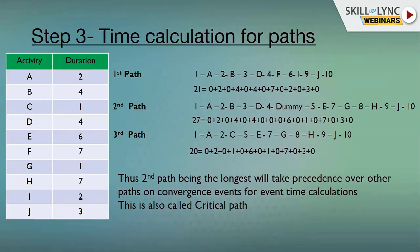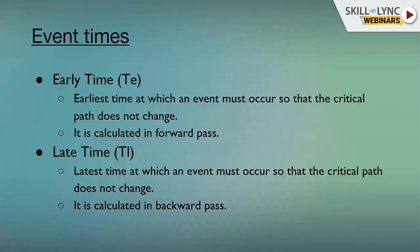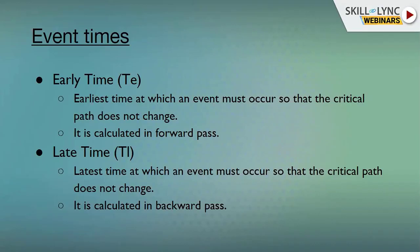The critical path gives you the critical activities that need to be monitored without fail. Any delay in these activities will directly hamper your project duration. Moving on to event time calculations, there are two types of event times: earliest time — the earliest time at which an event must occur so that the critical path does not change — and late time — the latest time at which an event must occur so that the critical path does not change. Late time is calculated in the backward pass.